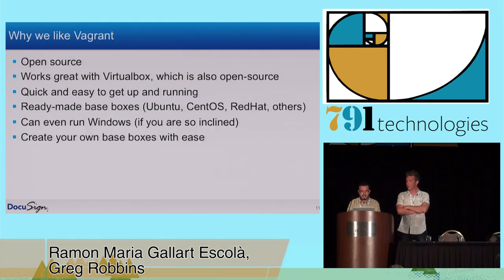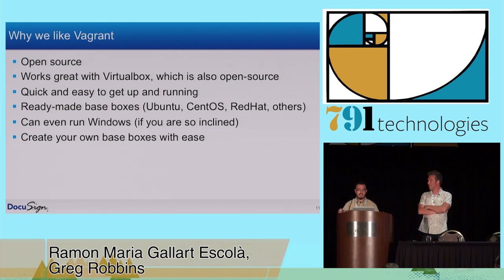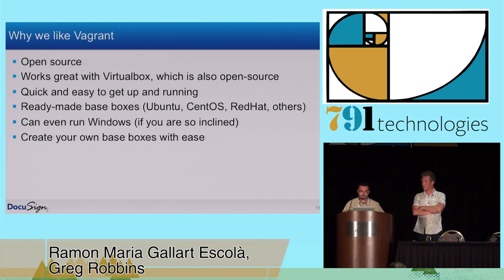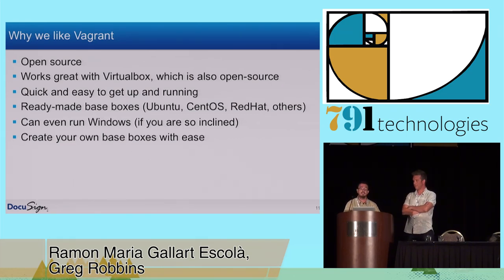So that's Vagrant. Why do we like Vagrant? We like open source tools — Vagrant is an open source tool and we like it. It allows us to do whatever we want with a virtual machine. It's very well adapted to VirtualBox, which is also an open source tool. There are a lot of ready-made boxes — Ubuntu, CentOS, whatever flavor of Linux you can imagine. If you want, it can also work with Windows, and you can create your own base boxes in a very easy way.